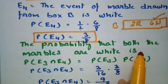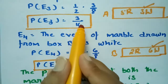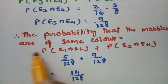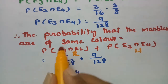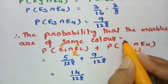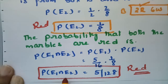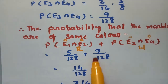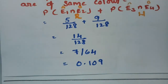The probability that both marbles are white is P(E3 ∩ E4) = P(E3) × P(E4) = 3/16 × 3/8 = 9/128. The total probability that the marbles are of the same color is 5/128 + 9/128 = 14/128, which equals 7/64, approximately 0.109.